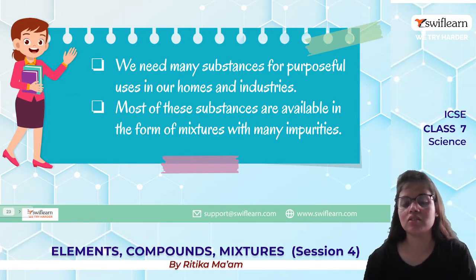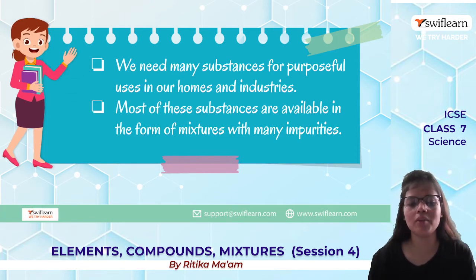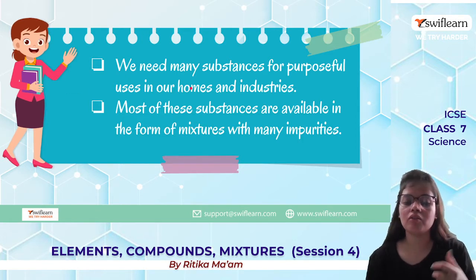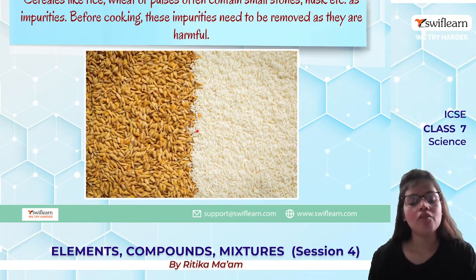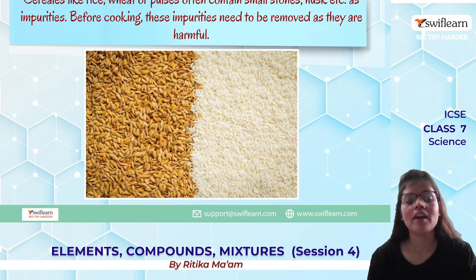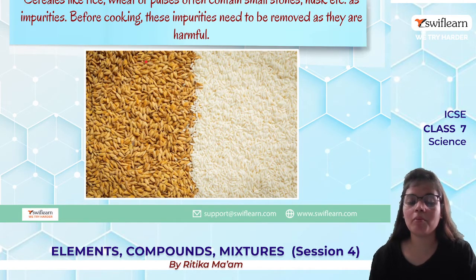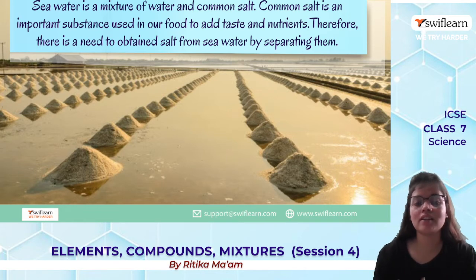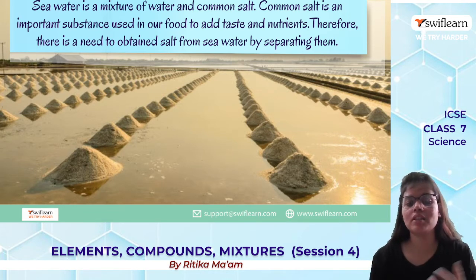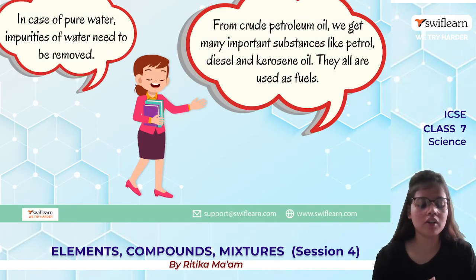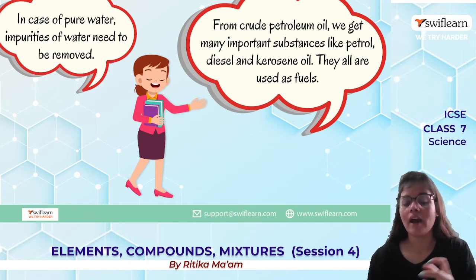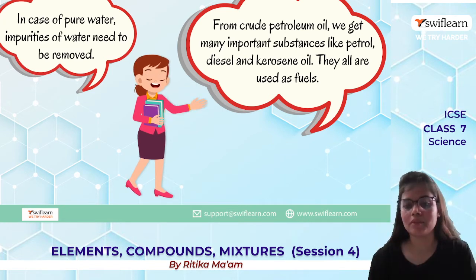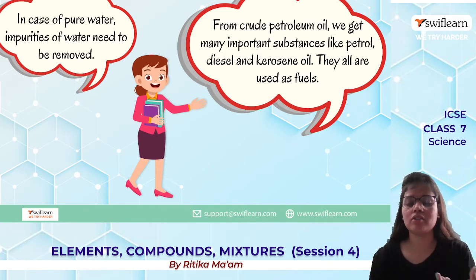We need many substances in daily life — at home and in industries — and these substances are available in the form of mixtures with many impurities. For example, rice, wheat, and pulses contain small stones, husk, etc., and before cooking we need to clean them thoroughly to make them edible. Salt, an important substance for taste and nutrients, is obtained from the sea and must be separated. Pure water also needs impurities removed, and from crude petroleum oil we separate diesel, kerosene, petrol, etc., for use as fuels.